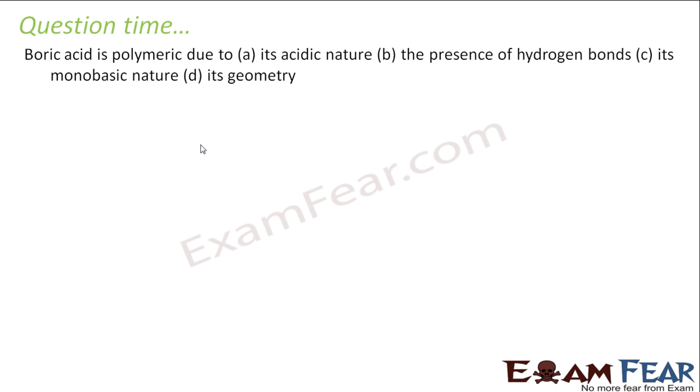The next question is that boric acid is polymeric. Why? Due to its acidic nature, presence of hydrogen bond, monobasic nature, its geometric. We have seen that it is polymeric. Why? Because of hydrogen bonds. That is why it exists in that structure. We have seen that complex structure of boric acid.